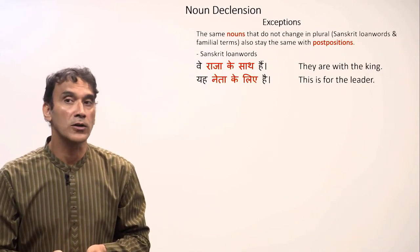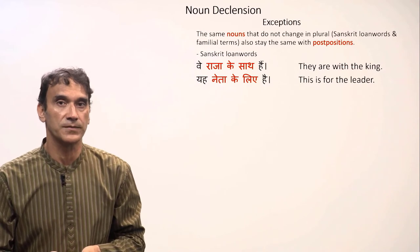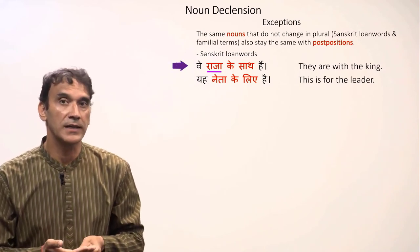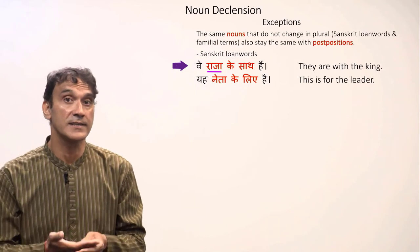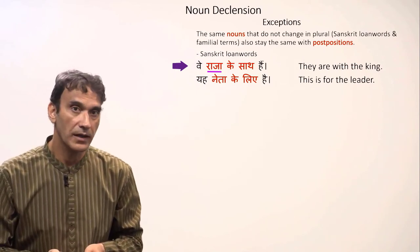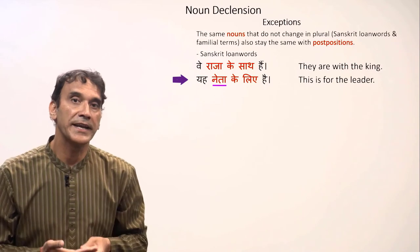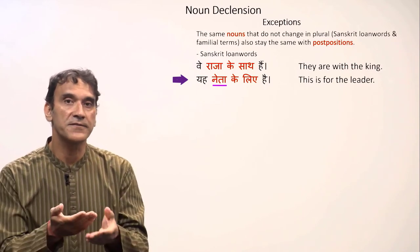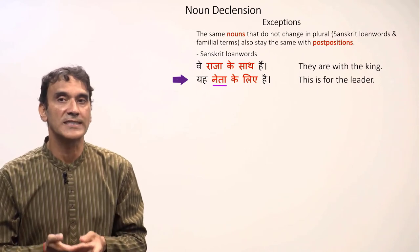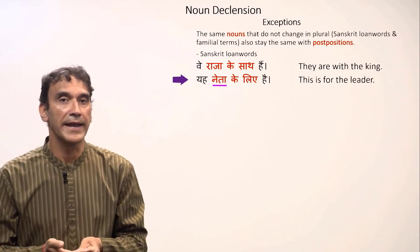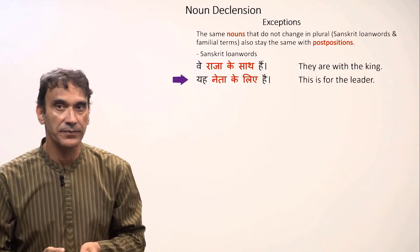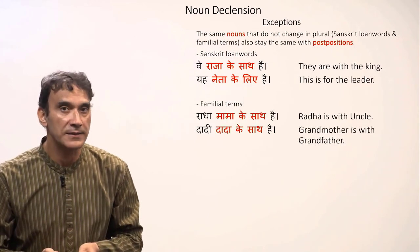Sanskrit loan words also do not change with postpositions. For example: 'Wey raja ke saath hain' — they are with the king; 'raja' stays the same, not 'raje.' 'Yeh neta ke liye hai' — this is for the leader; 'neta' is also a Sanskrit loan word, so it stays the same as 'neta ke liye,' not 'nete ke liye.'